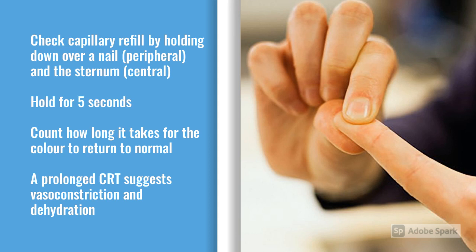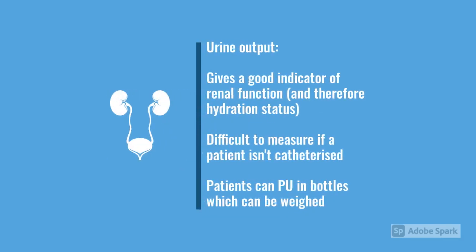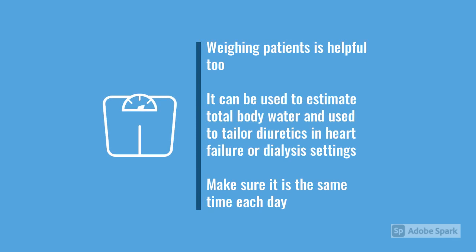When taking observations, the trend is what you're looking at — an individual observation on its own isn't enough to base your whole assessment on. Urine output is difficult in ambulatory patients; nursing staff can weigh a commode to measure output. You can also catheterise a patient, but there's an increased infection risk. Weighing patients is really useful — particularly heart failure and dialysis patients will have daily weights and adjust their frusemide or dialysis based on weight, as it's a non-biased indicator of total body water.